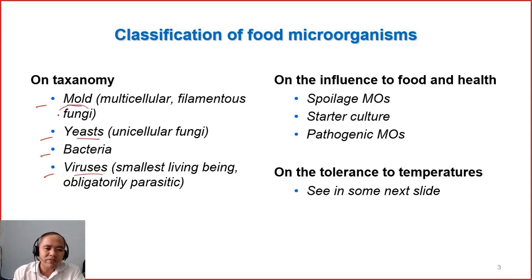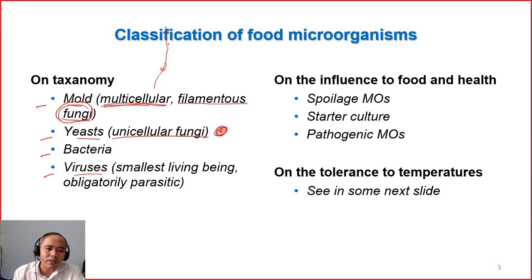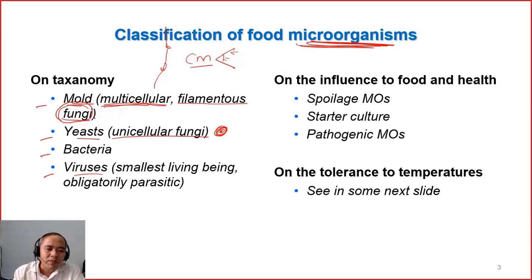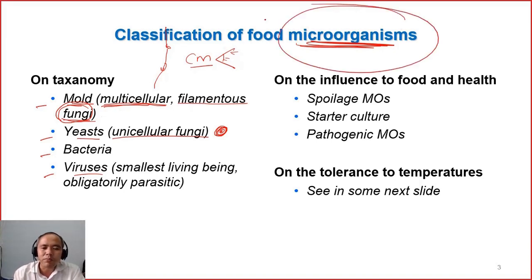Mold and yeast together we can call them fungi. Mold and yeast are fungi, but mold are multicellular filamentous fungi, and yeast are unicellular fungi — meaning only one cell. Mold has many cells and can be quite large, even several centimeters, so we can see them with our eyes. There was actually debate in the past about whether to put mold into microorganisms, because mold is not very small. But after discussing many aspects — how they influence food and their applications — they were finally placed in this group.